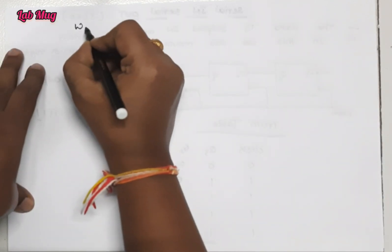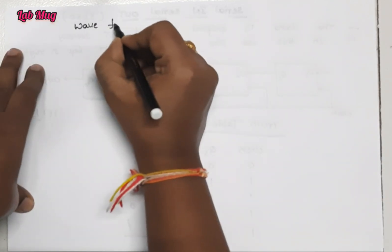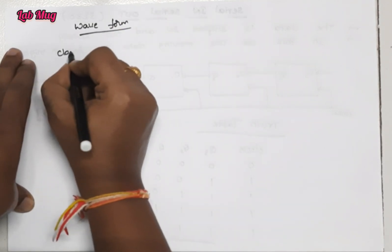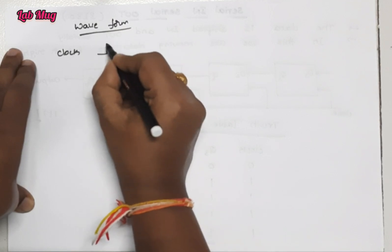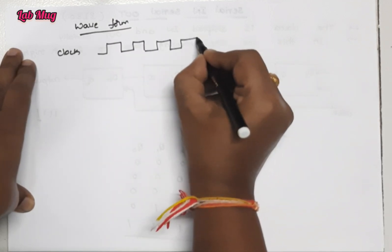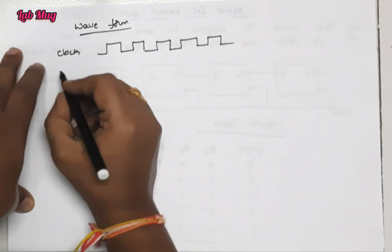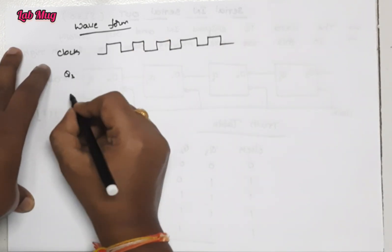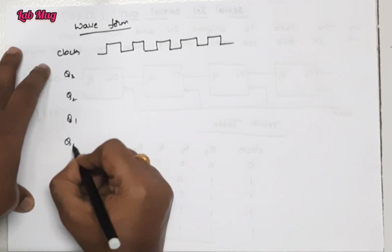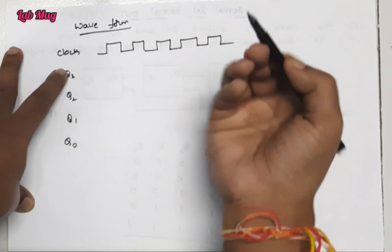Then the waveform for this - that is the clock form. Here we are taking the clock. The clock pulse values remain the same and based on those values we make the changes.